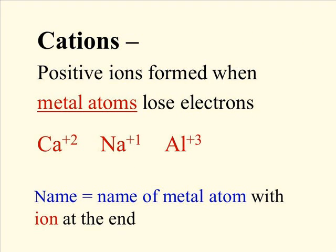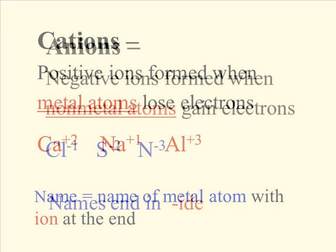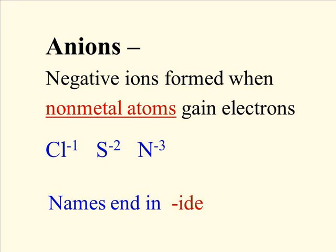When you name a cation, you simply name the metal atom and add the word 'ion' at the end. Ca²⁺ is the calcium ion, Na⁺ is the sodium ion, and Al³⁺ is the aluminum ion. Anions have their names changed by removing part of the atom name and replacing it with -ide. Chloride, sulfide, and nitride are all anions.